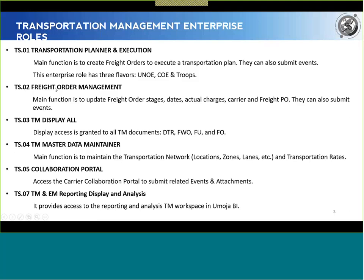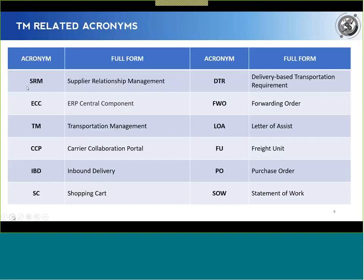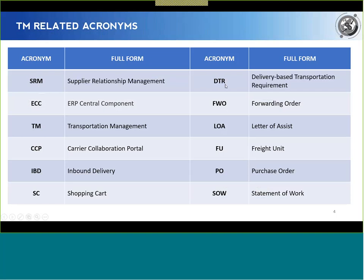We're going to be focusing on the TS02 role. The last thing I want to show in this PowerPoint before we start logging into the system are the acronyms. Some of you may be familiar with these; SRM, of course, we're more than familiar with. We have the acronym DTR — Delivery-Based Transportation Requirement — one of the first we're going to see. It's a document generated in TM after the inbound delivery document is generated. After the PO has been approved, the inbound delivery is generated, and in TM the DTR is automatically generated — it's sort of a mirror document of the inbound delivery.